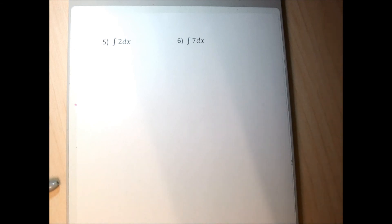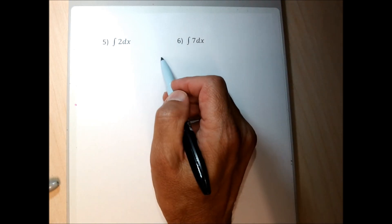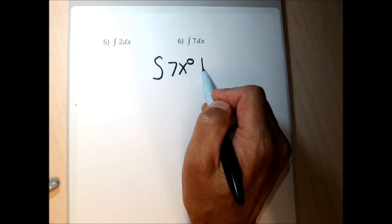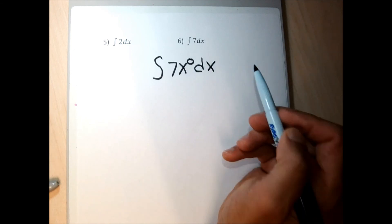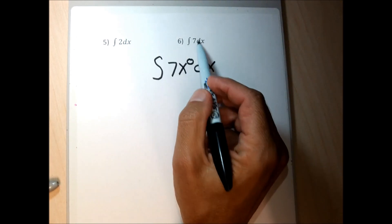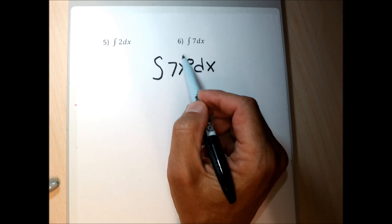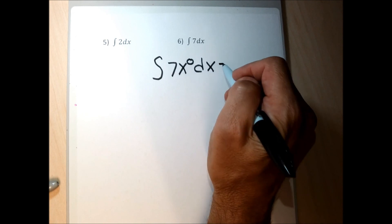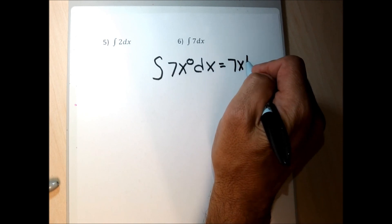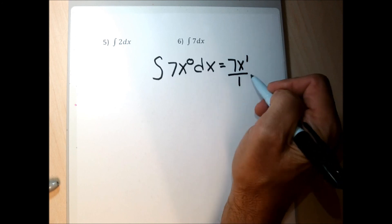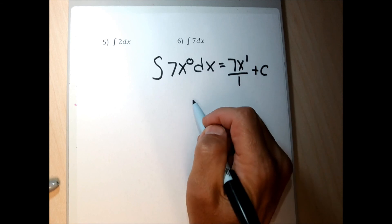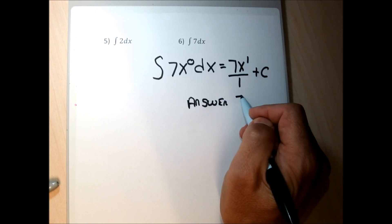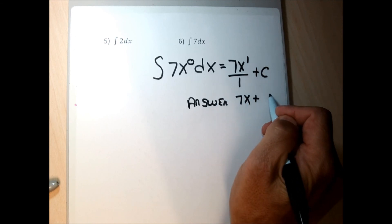Problem 6: the integrand is 7, which doesn't have an x term, making it hard to apply the rule. So I rewrite it as 7x to the zero, because x to the zero equals 1, making this really just 7. Now I apply the rule: add 1 to the exponent (0 plus 1 is 1), divide by the new exponent (1), and tack on plus C. The answer is 7x plus C.